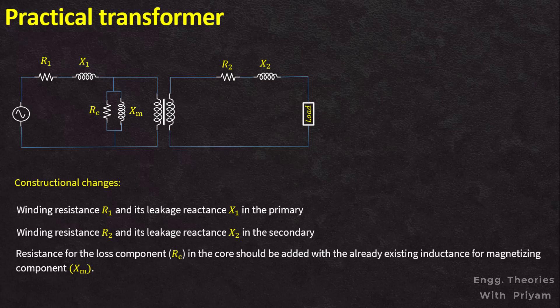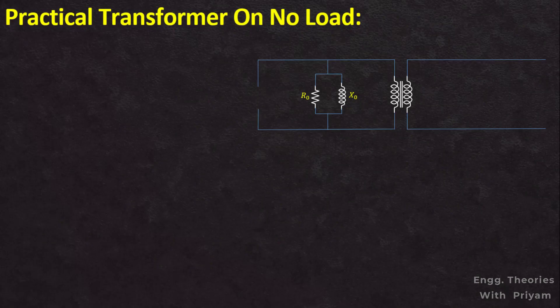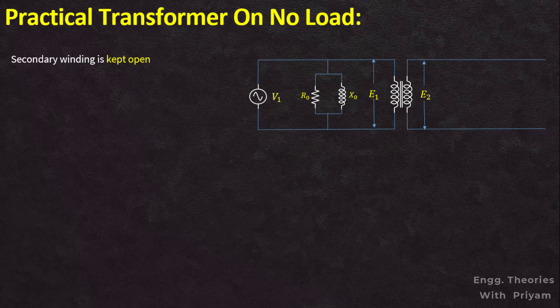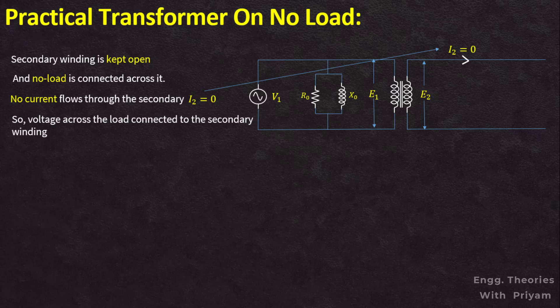In no-load condition, the transformer draws a very small current in order to supply the core loss and magnetizing current. That's why we will not consider resistance and reactance connected in both of the windings. The equivalent circuit shows supply voltage V1, induced voltage in the primary E1, induced voltage in the secondary E2, and voltage across the load V2. As there is no load and the secondary is kept open, the current I2 is equal to zero and voltage V2 is also equal to zero.